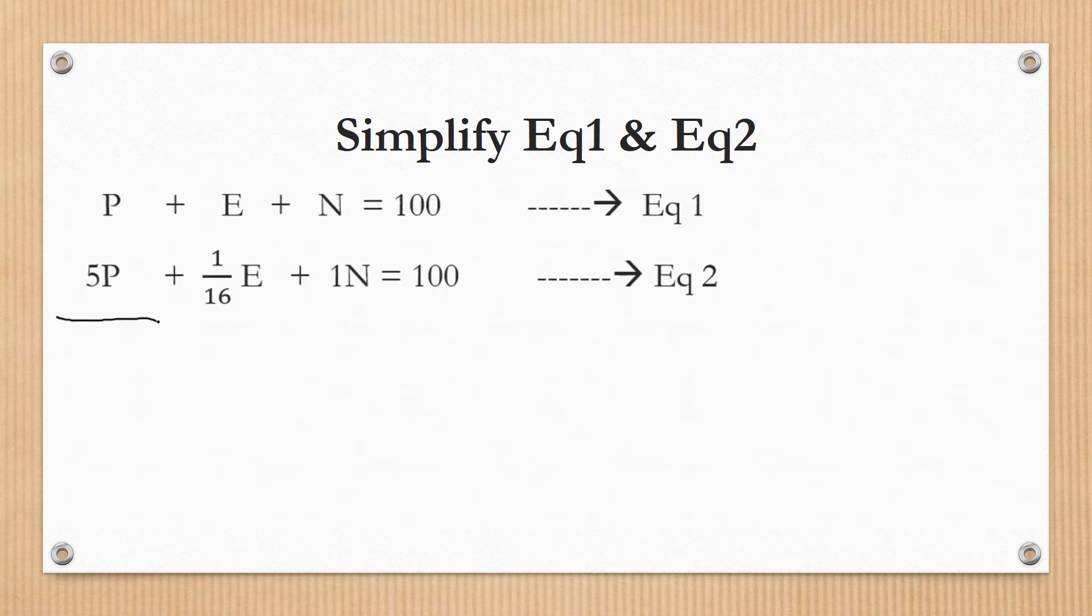Take the first and second equation and subtract. Change the sign. N plus N minus N get cancelled. Next, P minus 5P, so 1 minus 5 is minus 4P. Then plus the erasers, 1 minus 1/16 erasers. 100 minus 100, the constant is 0. So minus 4P plus 15/16 E equals 0.